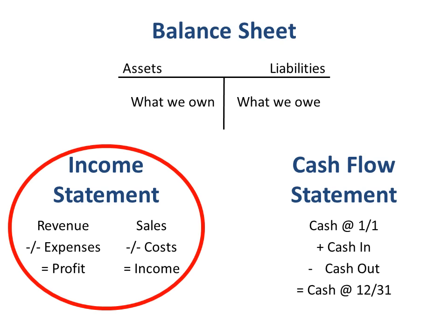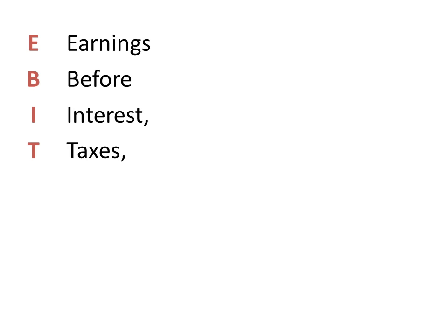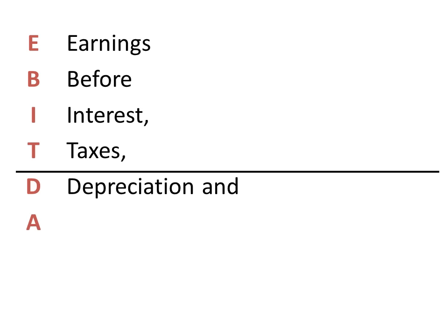EBIT and EBITDA are income statement metrics. EBIT is earnings before interest and taxes. EBITDA is earnings before interest, taxes, depreciation and amortization.